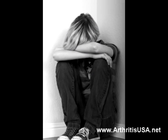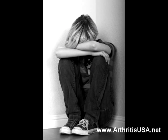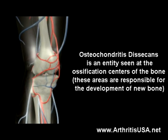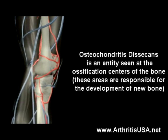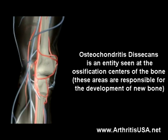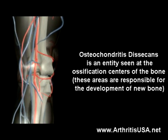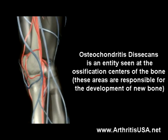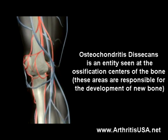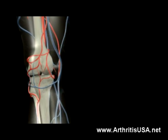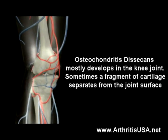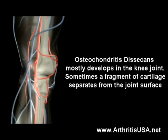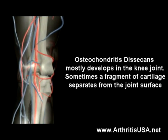This is typically seen in young males. Osteochondrosis desiccans is an entity seen at the ossification centers of the bone. These areas are responsible for the development of new bone. Osteochondrosis desiccans mostly develops in the knee joint.